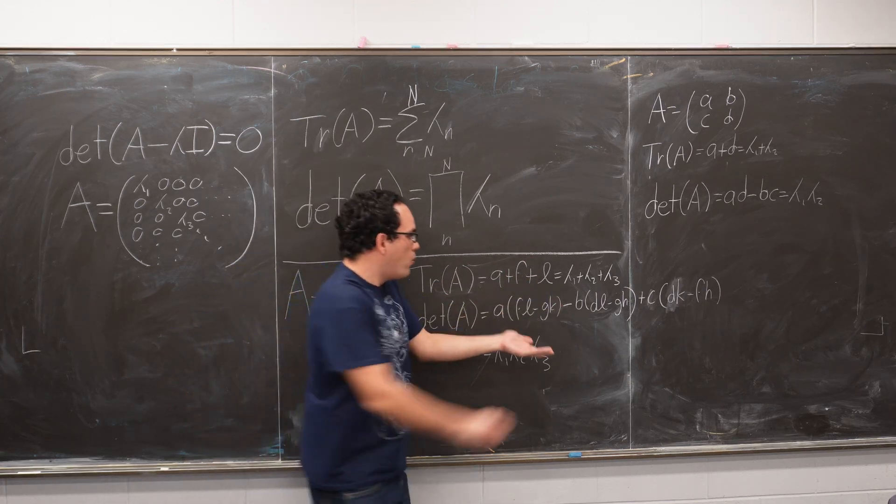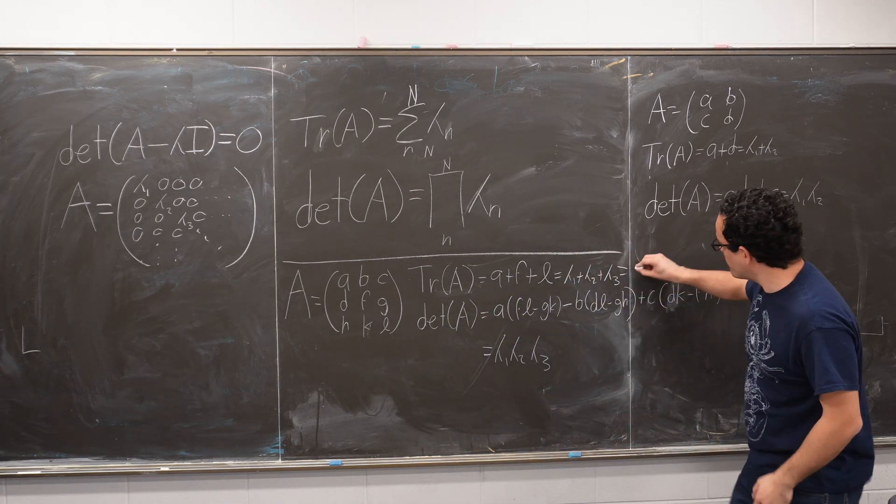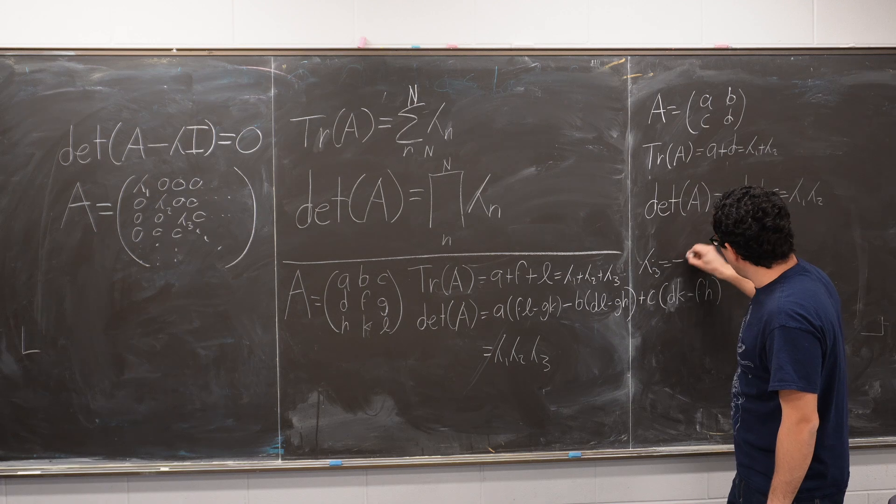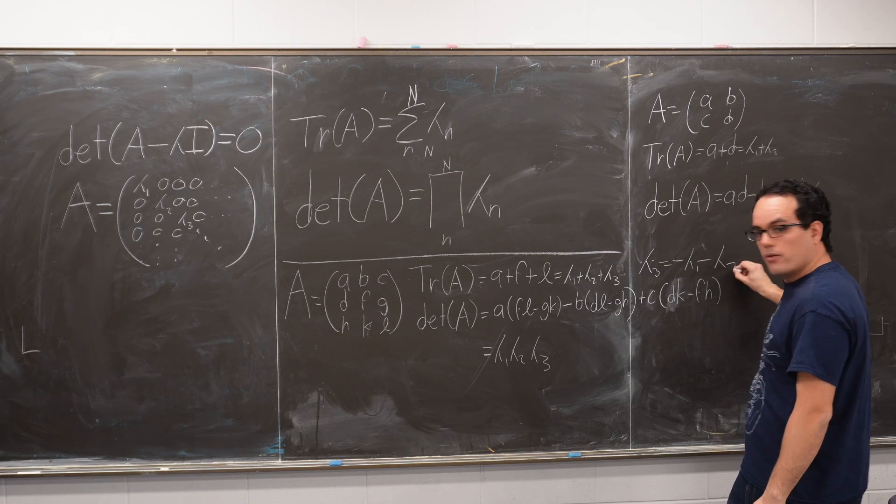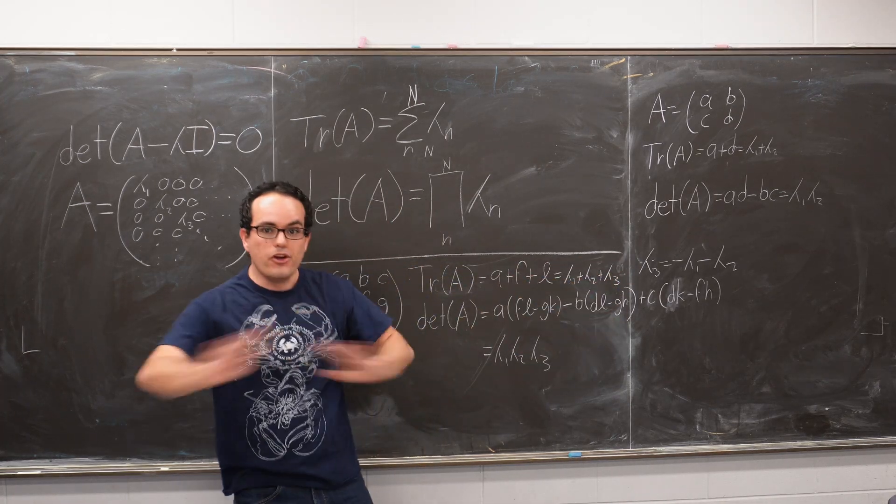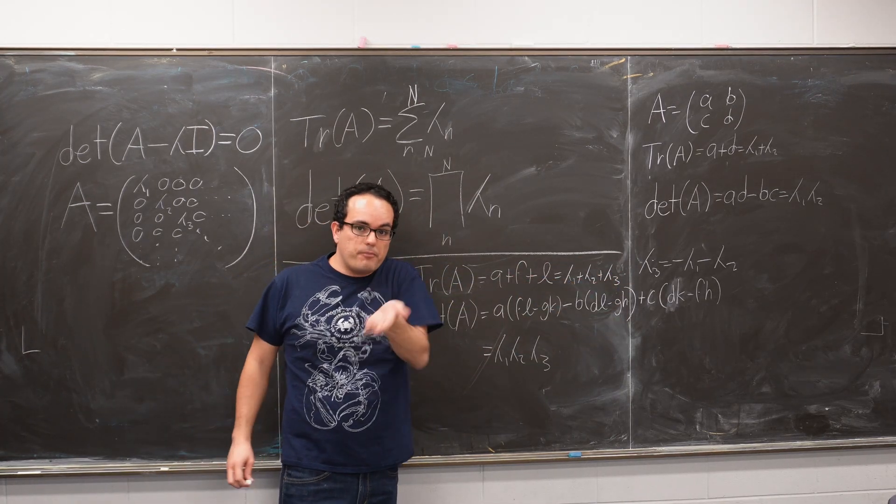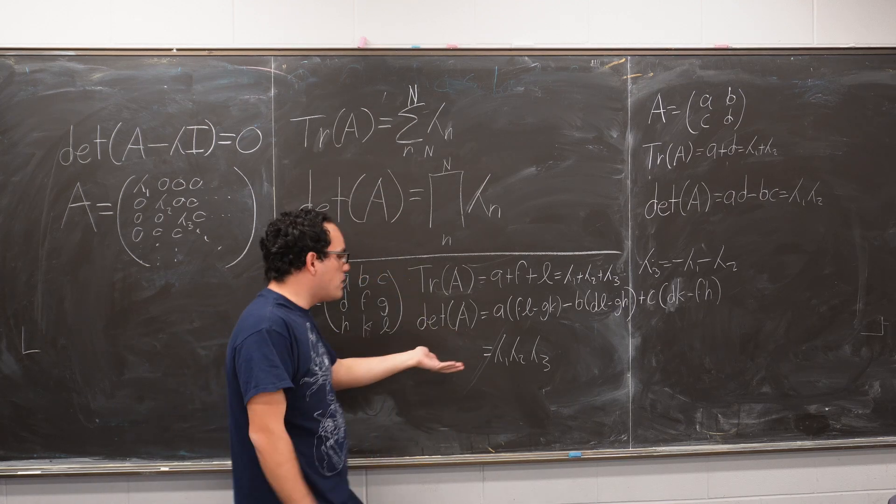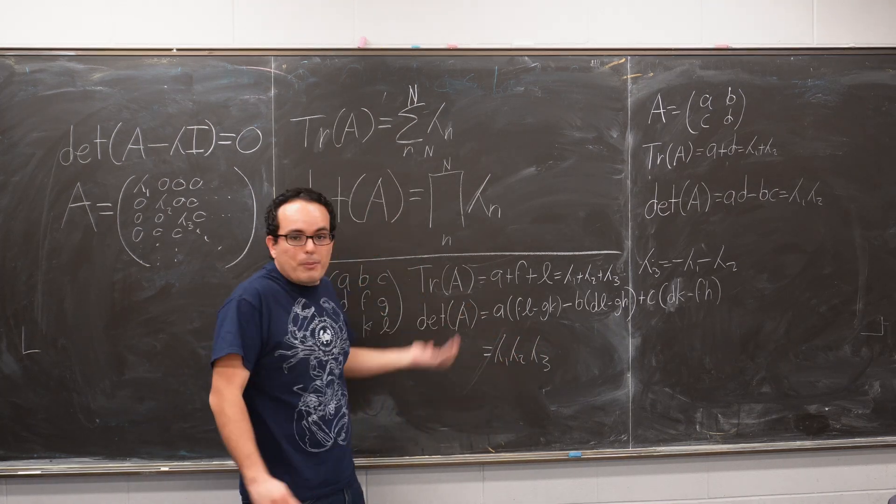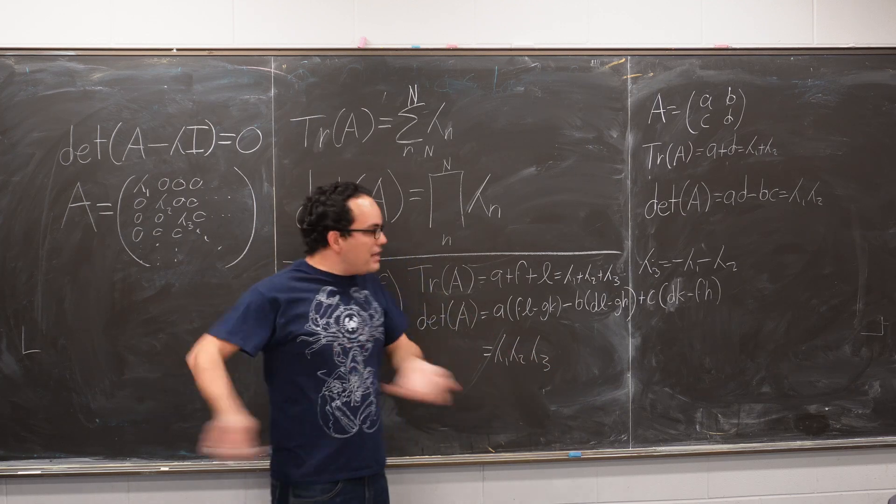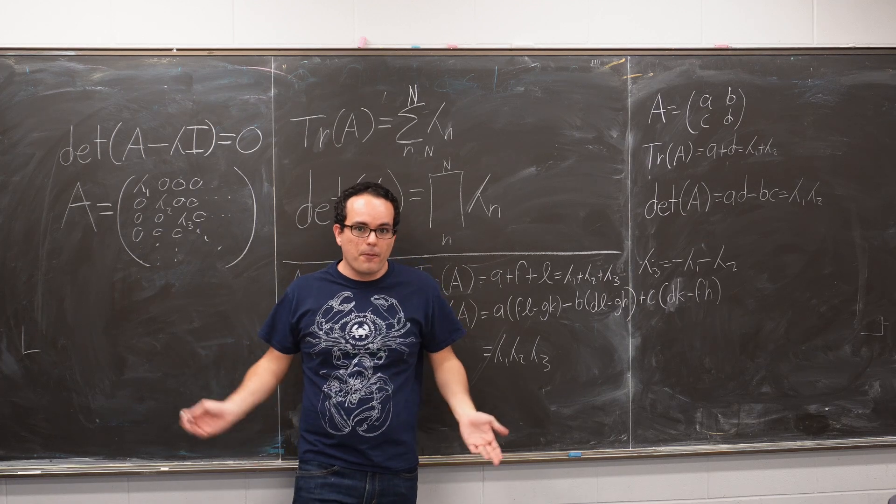So you automatically know that if the trace is equal to zero, then λ3 is equal to minus λ1 minus λ2. And so, that's one degree of freedom gone. Also, something very common is if your matrix is not invertible, then the determinant will be equal to zero. And that automatically tells you that one of the eigenvalues is equal to zero. That's another way to get rid of one degree of freedom.